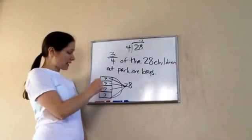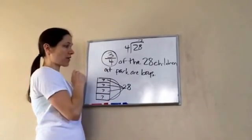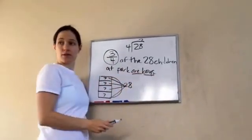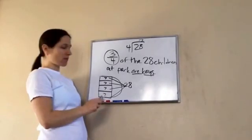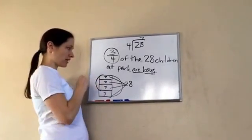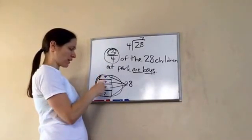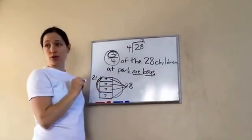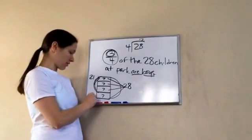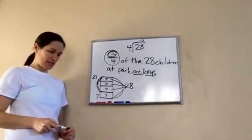So how many boys, three out of four, are boys? 21. 21. Seven times three, three of the four, three out of the four are boys. So 21 are boys, and so how many are girls? Seven. Seven are girls. Very good. You see how we did that?